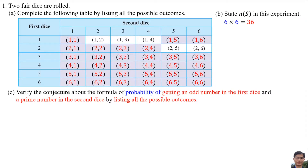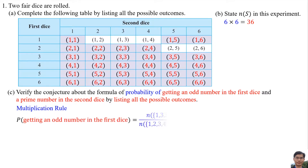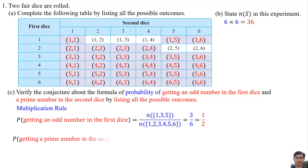Part B: Verify the conjecture about the formula of probability of getting an odd number on the first dice and a prime number on the second dice by listing all the possible outcomes. Using the Multiplication Rule: the odd numbers on the first dice are 1, 3 and 5, so the probability of getting an odd number is 3 out of 6, which equals 1 per 2. The prime numbers on the second dice are 2, 3 and 5, so the probability of getting a prime number is also 1 per 2.